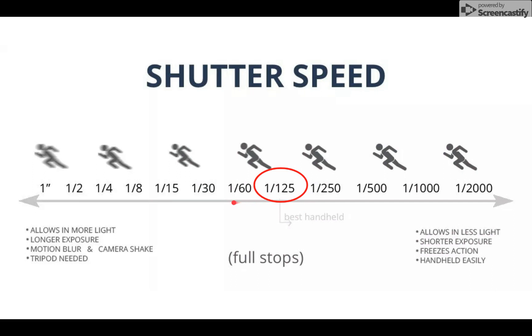1/60th of a second is the slowest shutter speed that you can handhold your camera. Another one to memorize would be 1/2000 of a second. We really don't have enough light to use that indoors, but that would be a good outdoors setting.